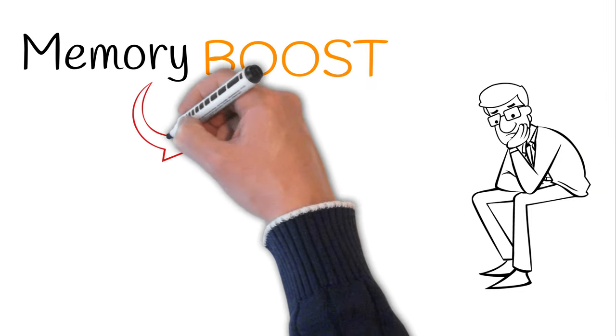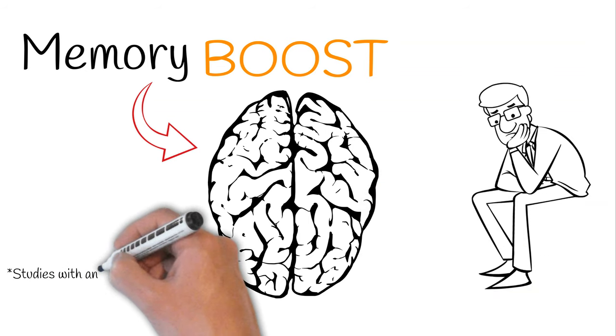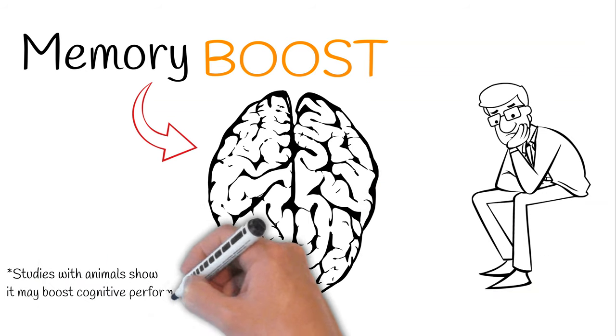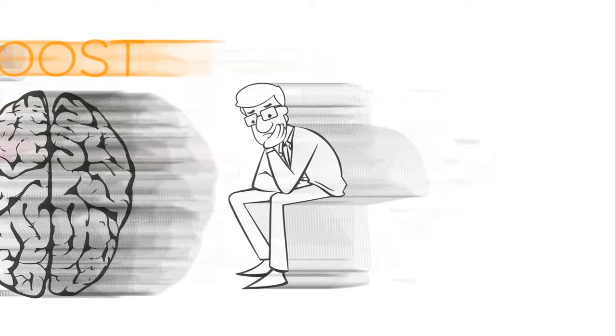The third benefit of ashwagandha is that it may boost memory. Animal studies show that it can boost cognitive performance in animals with a brain injury or disease. However, keep in mind that ashwagandha has been used as a memory booster for over 3,000 years, so something must be going on here.